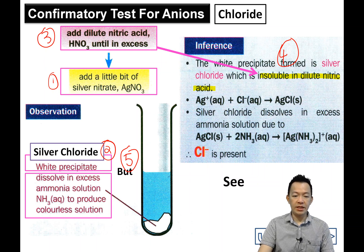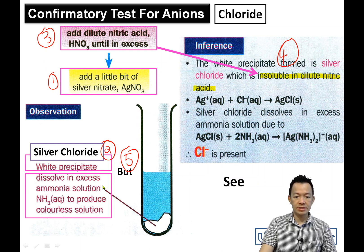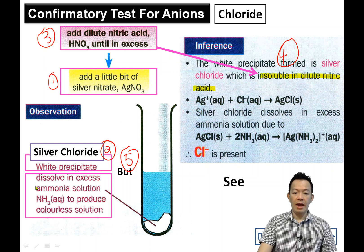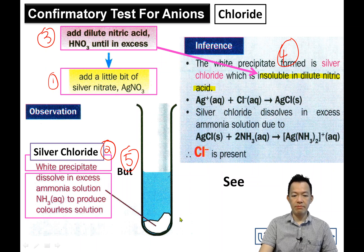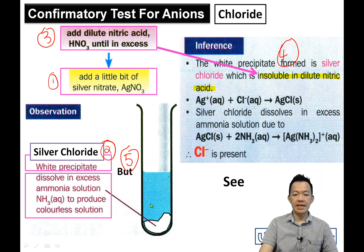But the white precipitate will dissolve in excess of ammonia solution to produce a colorless solution. 不过这个白色的precipitate却溶解在多多的ammonia里面，然后变成没有颜色的solution。So dissolve in excess of ammonia to produce a colorless solution.